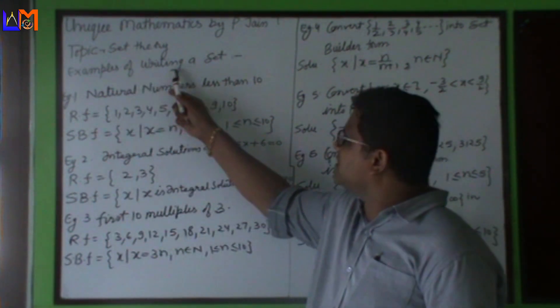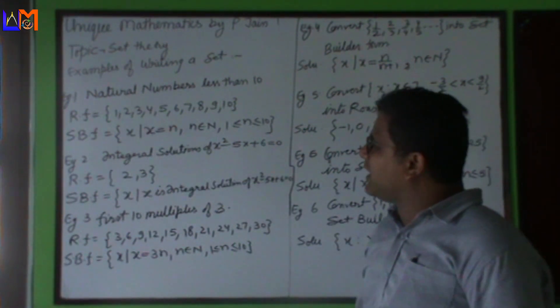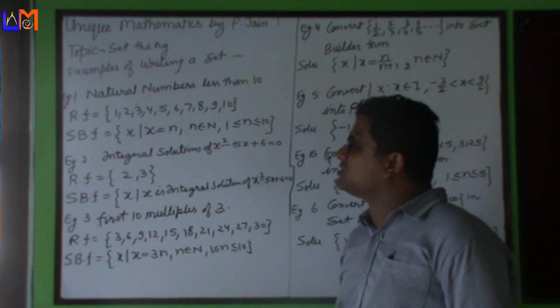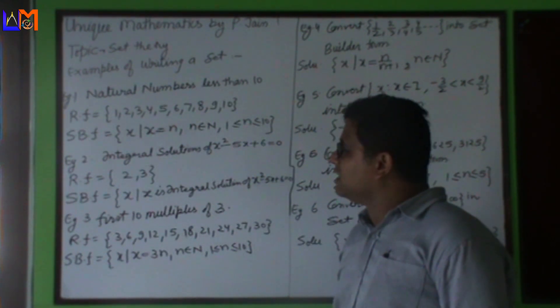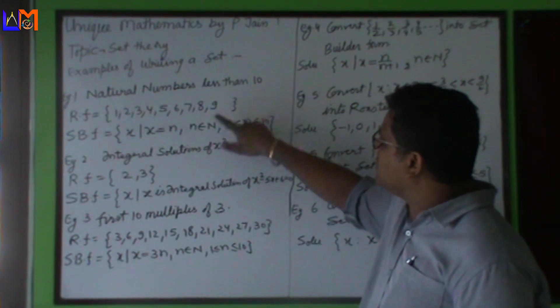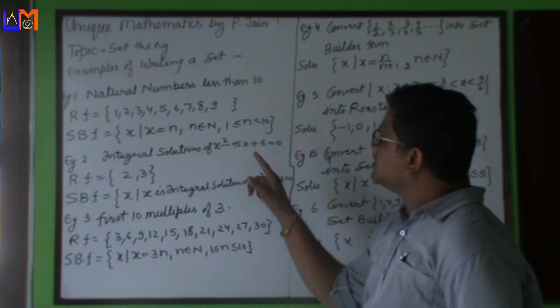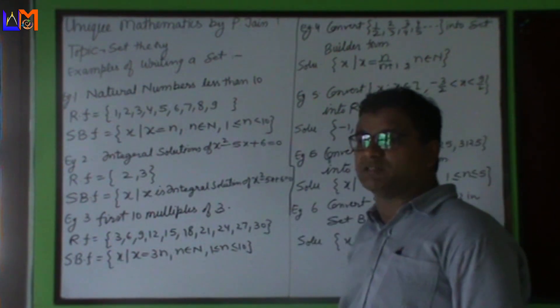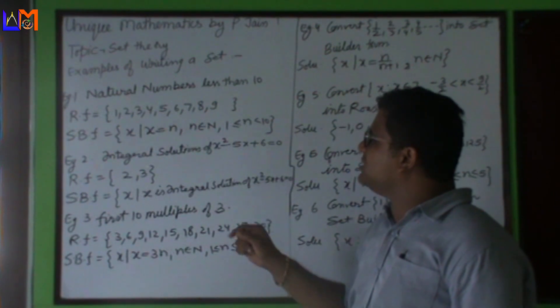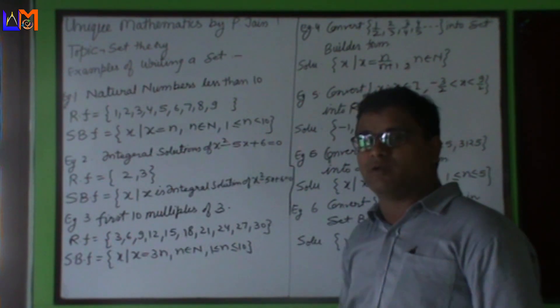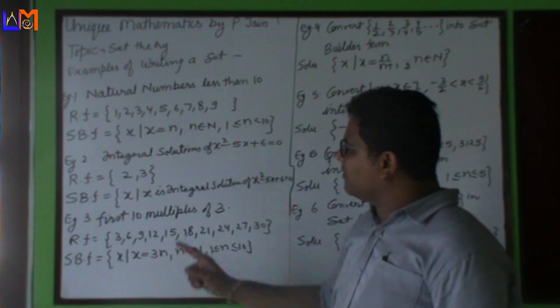The first example: write the set of natural numbers less than 10. If we write it in roster form, that means we have to list all the natural numbers of this set, all the elements of this set. In this set we have natural numbers less than 10, so I have written all natural numbers: 1, 2, 3, 4, 5, 6, 7, 8, 9. Here we cannot include 10. So many students do this mistake. Less than 10 means we cannot take 10.